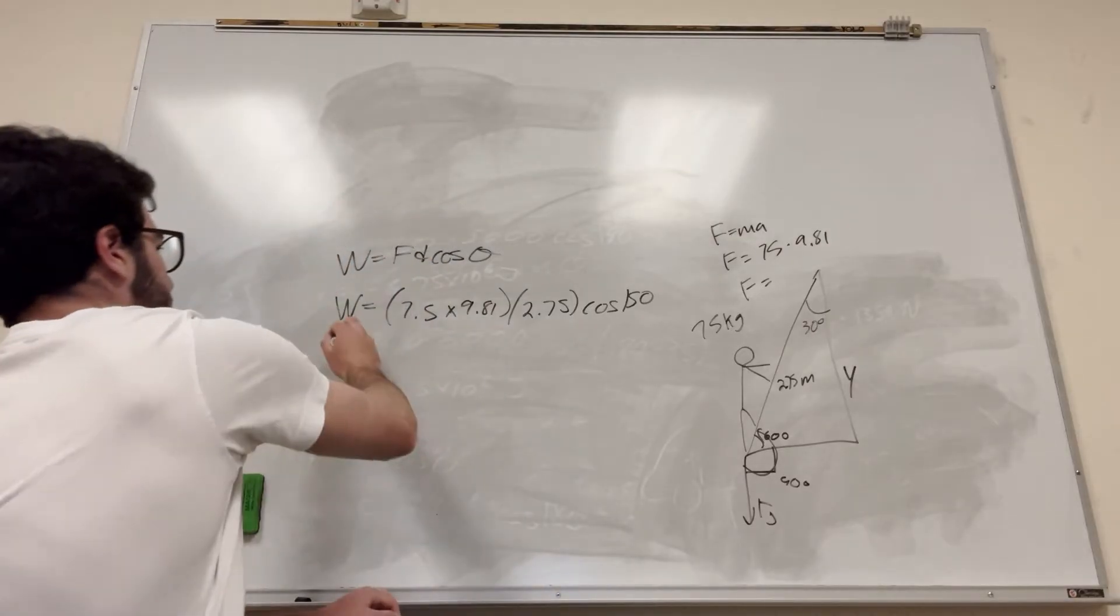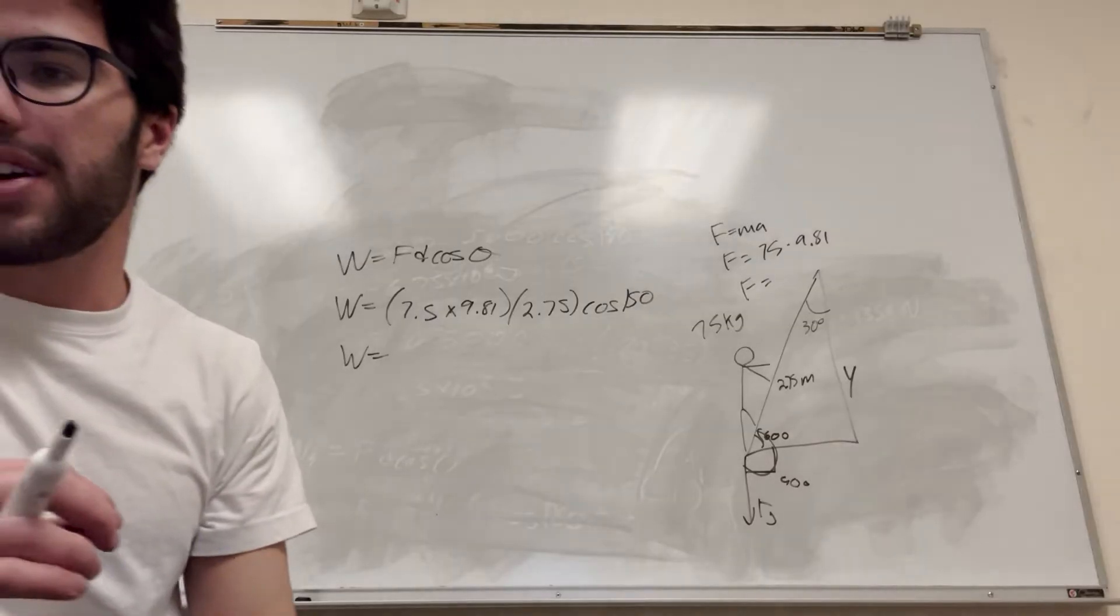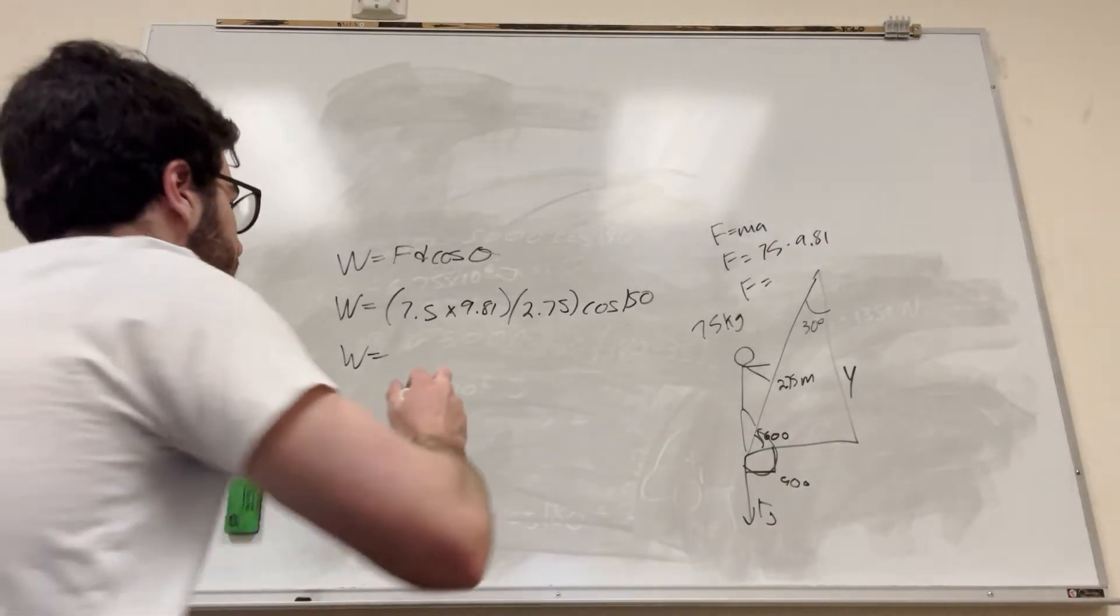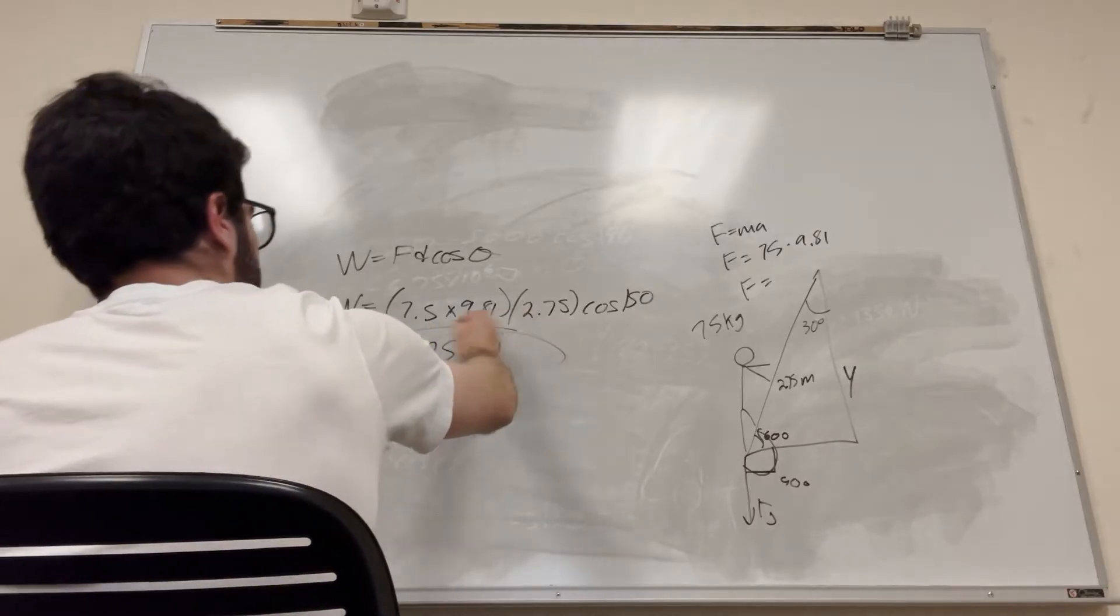So then if you plug all this in, you can find that the work of gravity, negative, what is it, 1750? Negative 1750 joules. So that's the work that gravity does on him.